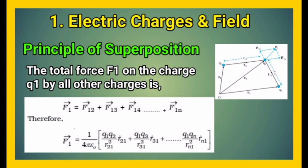4 pi epsilon naught into Q1 Q2 upon R21 square into R21 cap plus dot dot dot plus Q1 Qn upon Rn1 square into Rn1 cap.